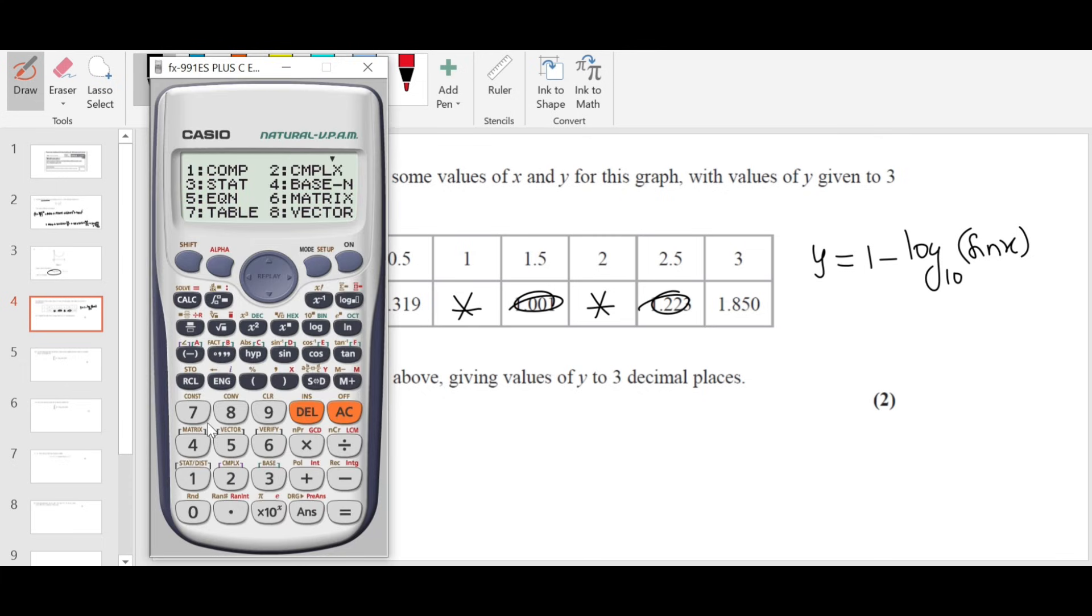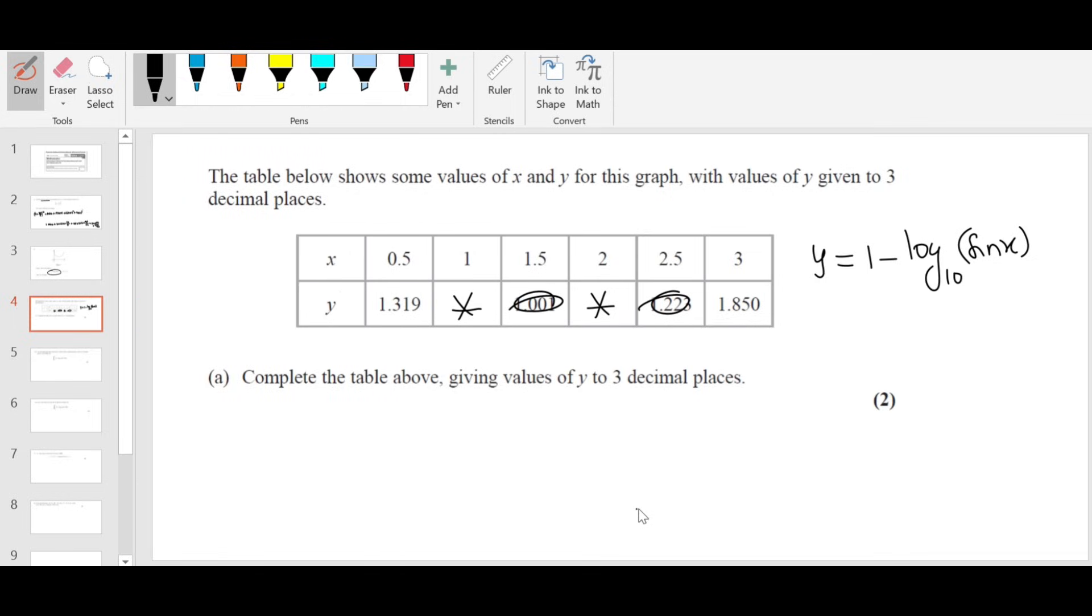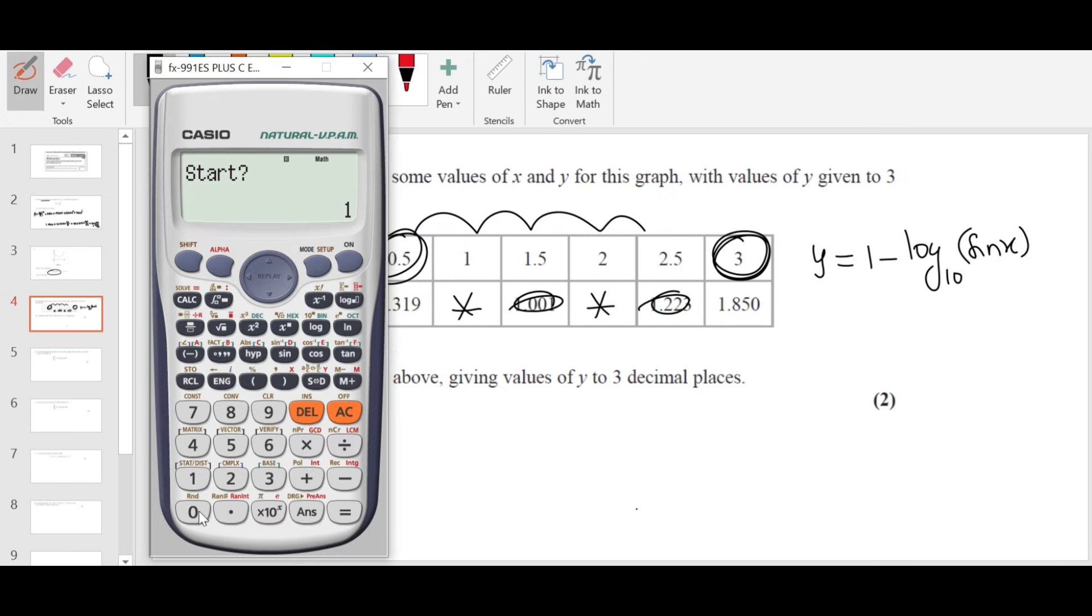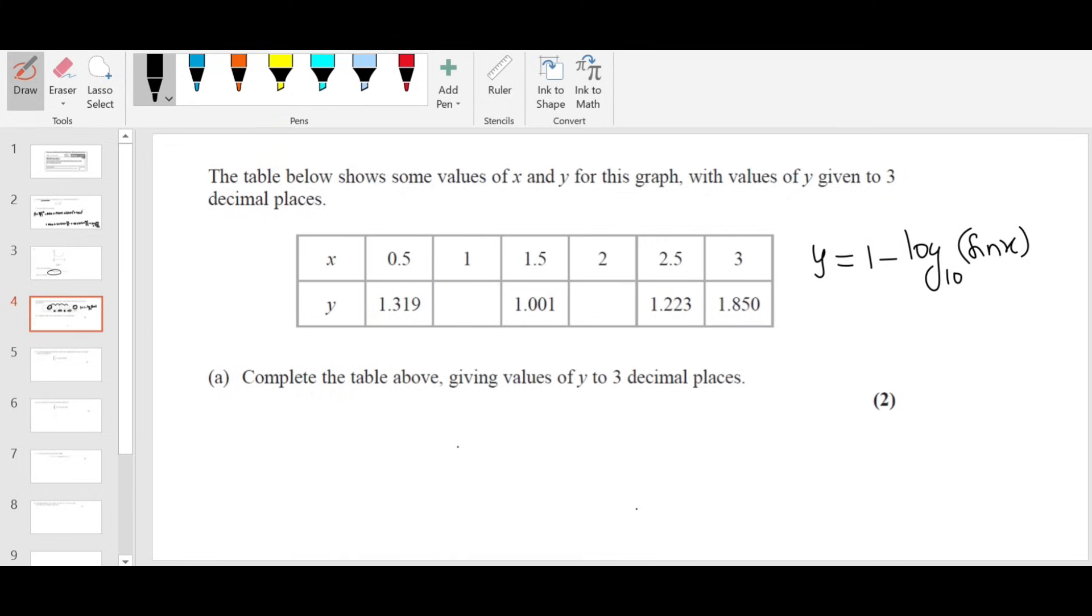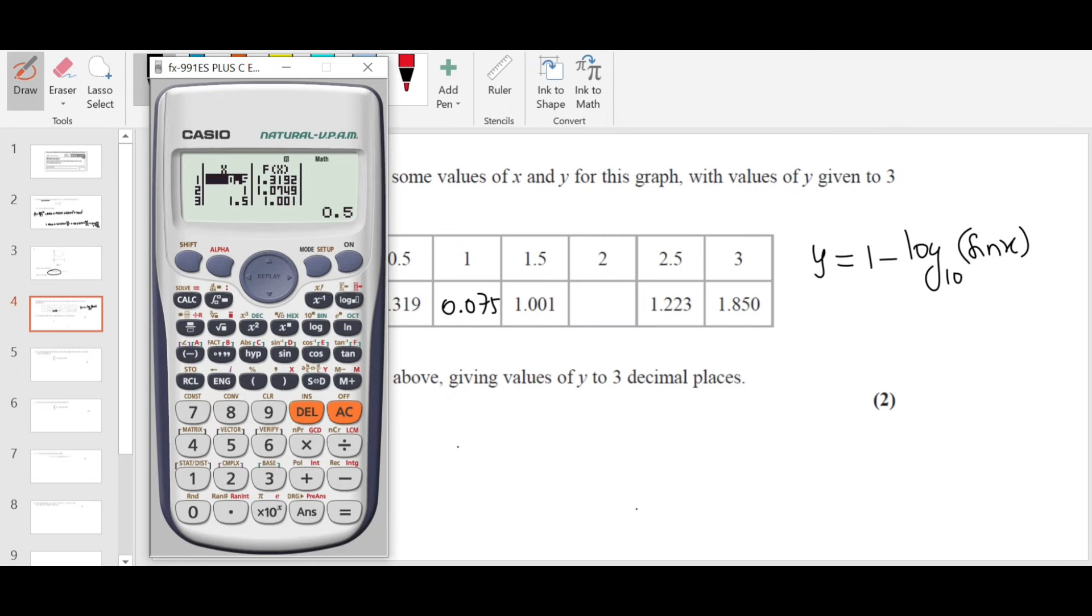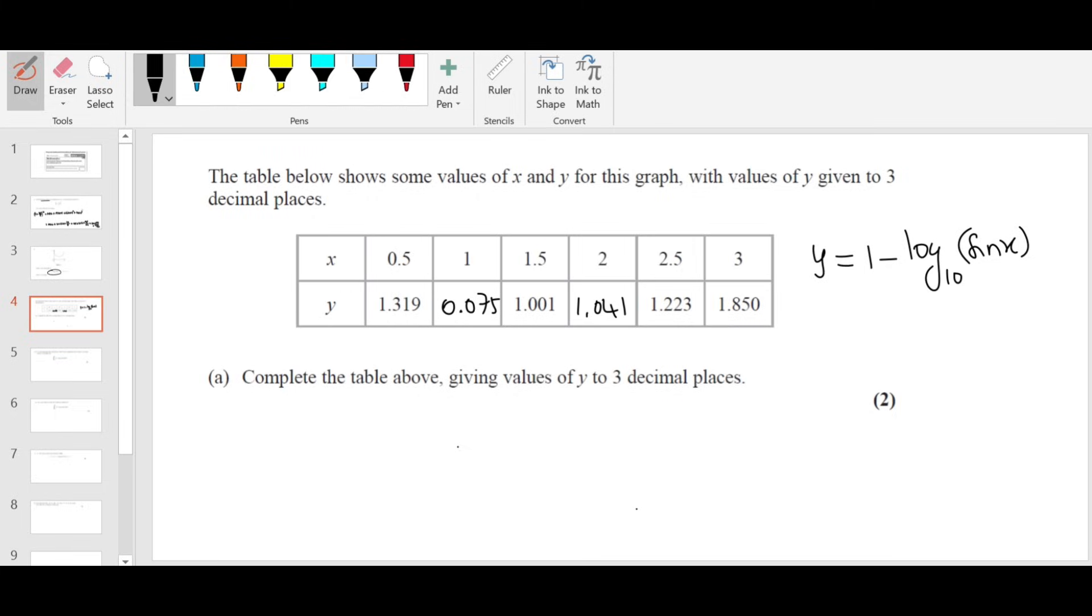You go to mode number 7 table. Type the function 1 minus log sin x. The default base is 10. It's asking for the second function, no second function. So equal. The start value is 0.5, end value is 3, step is also 0.5. It will generate a nice table for you. So for 1, it's 0.075. And then for 2, you scroll down, 1.041. That's how we complete the table.